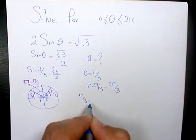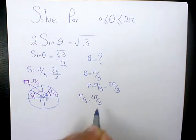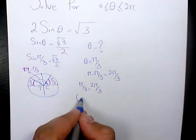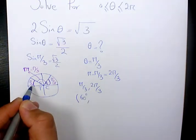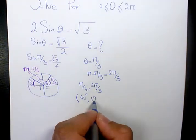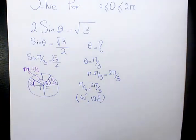If you want to write it in degrees, it's going to be 60 degrees, and 180 minus 60 which is going to be 120 degrees. So these are the two answers to this question.